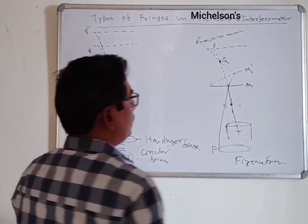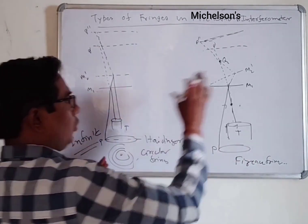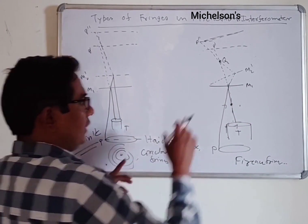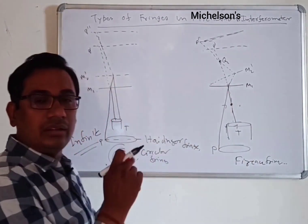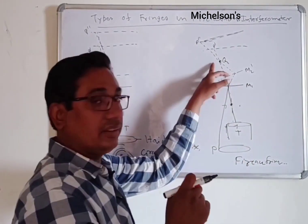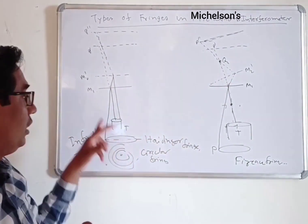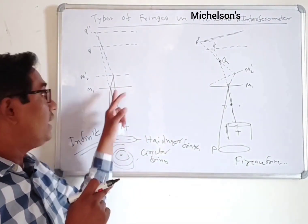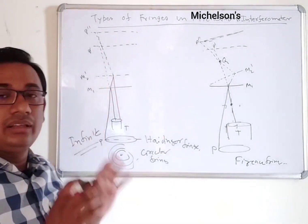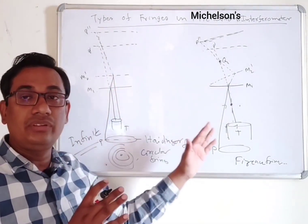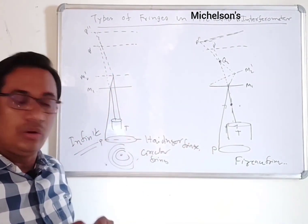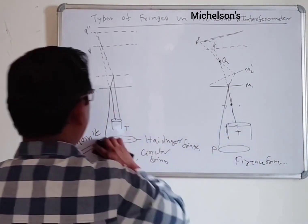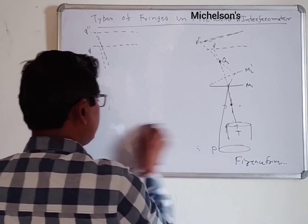The basic difference is: in localized fringes, fringes are formed at a finite distance, whereas in circular fringes, the fringes are formed at an infinite distance. Now we will discuss how to calculate the radius of circular fringes in the Michelson interferometer.